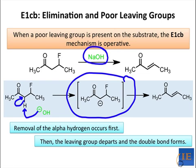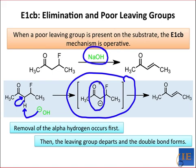More important to recognize, though, is the resonance stabilization of the anionic intermediate. This stabilization helps explain why deprotonation takes place here instead of at the methyl group.